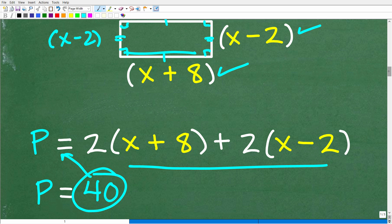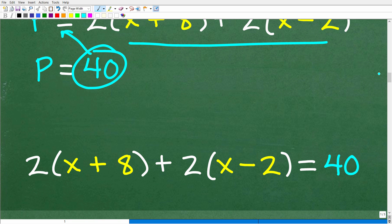Now, of course, we're told that the perimeter is equal to 40 meters. So what we want to do is set this expression right here equal to 40. So what we're looking at is this right here. Okay, so 2 times x plus 8 plus 2 times x minus 2 is equal to 40. So now the question is, can you solve this equation? Okay, so hopefully you can. And if you can't, I'm going to show you those steps right now.